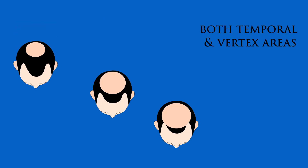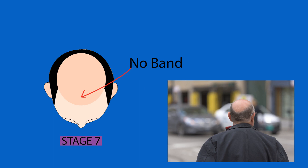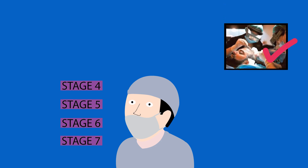Stages 4, 5, and 6 all have both frontal border and vertex hair loss. In Stage 4, there is a thick band of hair separating the two bald patches. In Stage 5, the band gets slightly thinner. In Stage 6, the band is very thin. In Stage 7, the band is completely gone — the two patches unite to give the typical horseshoe-patterned hair. For these late stages, you must always consult a doctor. You can still be eligible for hair transplant, and medical treatment may also work.